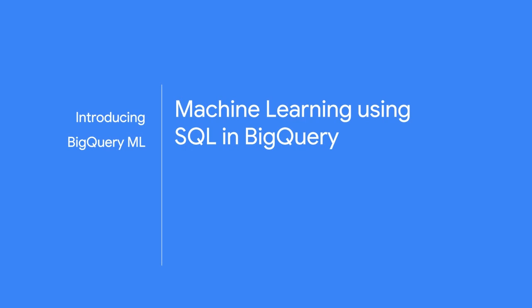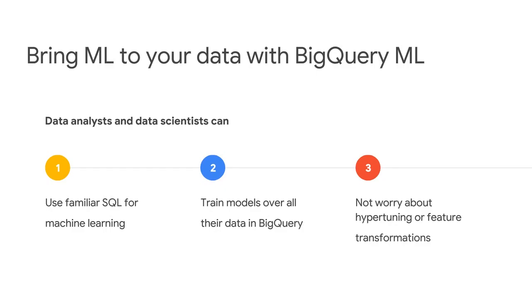To solve that, we are introducing BigQuery ML — machine learning using SQL within BigQuery. The main idea is to use familiar SQL, what every analyst is used to, for machine learning. Through that SQL, you can train models over all the data that's already in BigQuery, without needing to move data outside or use a separate tool. On top of that, we don't want to worry about hyperparameter tuning or any feature transformation — we want all of that to be taken care of by the system.